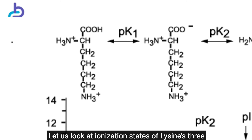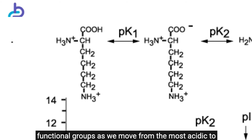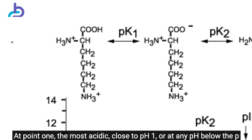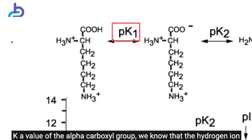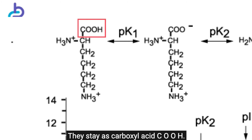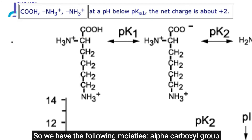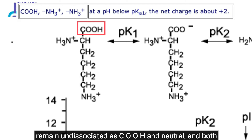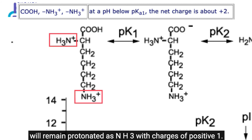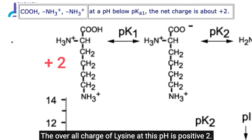Lysine also loses protons as one moves from left to right. At the most acidic end near pH 1, or below the pKa of the alpha-carboxyl group, the hydrogen ion concentration is high and no acidic carboxyl group needs to dissociate. The alpha-carboxyl group remains undissociated as COOH and neutral, while both alpha- and epsilon-amino groups of lysine, being basic, remain protonated as NH3-positive with charges of +1 each. The overall charge of lysine at this pH is +2.